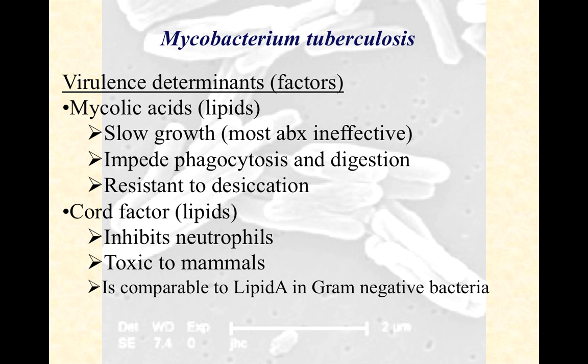That waxy coating also inhibits phagocytosis and digestion by phagocytes — very similar to a capsule in that way, except capsules aren't lipids or waxy; they're typically carbohydrates, sometimes a little protein. But it has a similar effect on phagocytosis and blocking the immune system from spotting them. The purpose of the mycolic acid out in nature — remember most mycobacterium species live on the surfaces of plants — is likely protection from sunlight and dryness. Plants tend to have waxes to keep them from desiccating, and the same is believed to be true of the various mycobacterium species that have these mycolic acids.